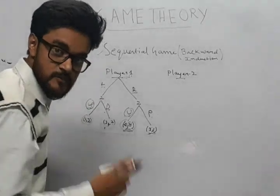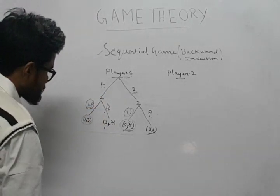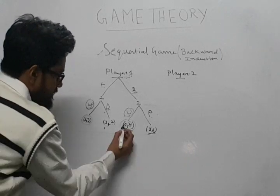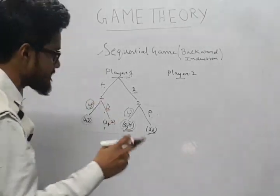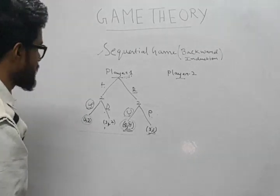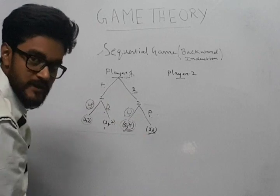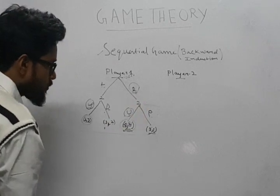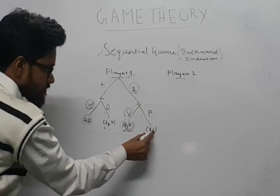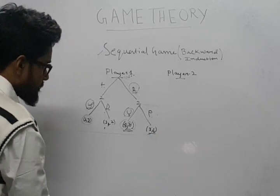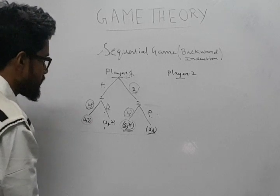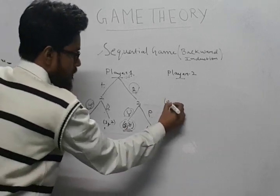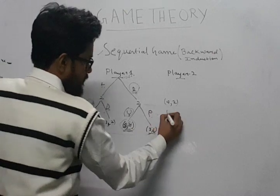Player 2 in both cases will play up. Now comparing the payoffs for player 1: if player 1 plays L and player 2 plays up, player 1 gets 1. If player 1 plays R and player 2 plays up, player 1 gets 4. So player 1 would foresee this and always play R. We conclude by backward induction that the Nash equilibrium is (4, 2), which corresponds to strategy profile R, U.